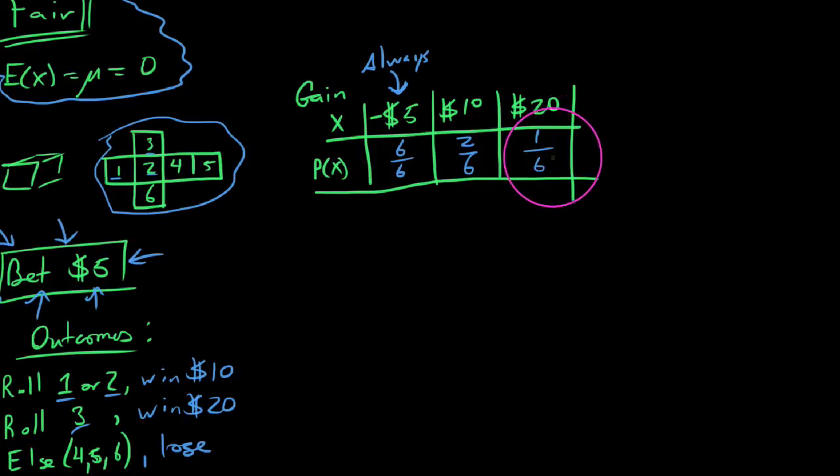So now we're going to calculate the average winnings, which means we're going to have to calculate the expected value. We've been building this other row that says we'll take everything that can happen in terms of gain times the likelihood that it does actually occur. For instance, X times P(X), we say X here is -5 times our probability 6/6, so -5 times 6/6 is -30/6. We say 10 times 2/6 is positive 20/6.